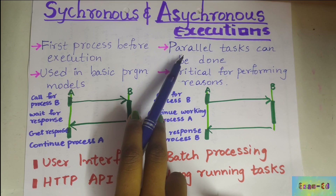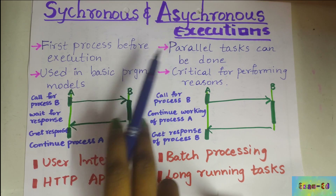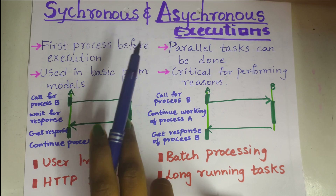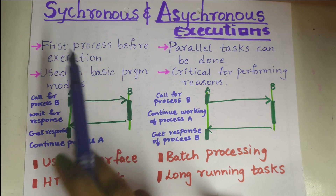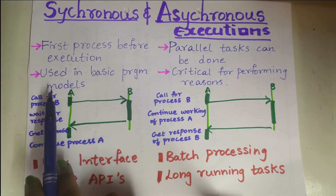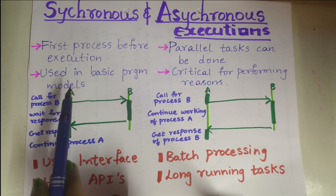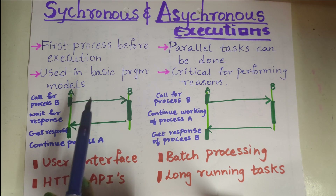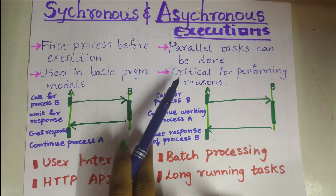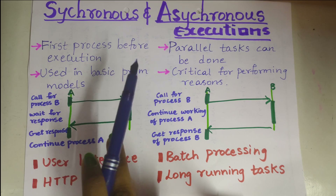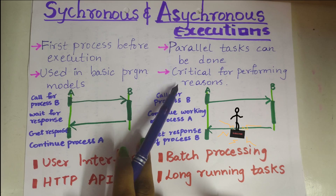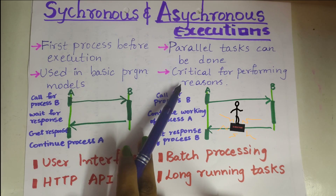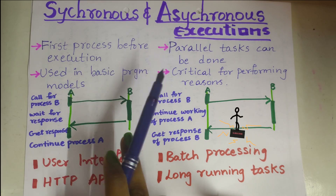In asynchronous programs, the next or second program task can begin execution in parallel without waiting for the first program task to complete. Synchronous is used in basic program models, while asynchronous is used when there are critical tasks or extra executions that need to be handled.